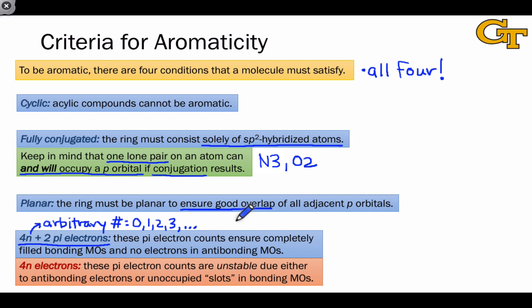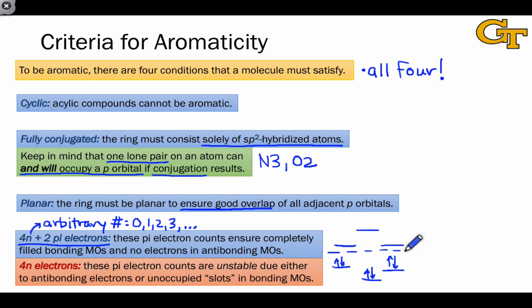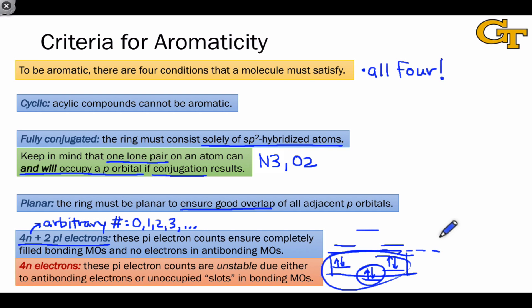The underlying reason why this 4N plus 2 pi electron rule exists is because these pi electron counts ensure completely filled bonding molecular orbitals and no electrons in the antibonding molecular orbitals. Recall the pi orbital structure of benzene, which had this sort of hexagon-like shape. The 6 pi electrons in benzene ensured that all of the bonding molecular orbitals were completely filled and all of the antibonding molecular orbitals were empty. All aromatic hydrocarbons have this orbital structure: one orbital at the bottom, degenerate orbitals up to the second from the highest, and then one orbital at the top in energy. So 2 electrons in the bottommost orbital plus 4N for each of the degenerate bonding levels leads to an aromatic situation. This is the origin of the 4N plus 2 rule.